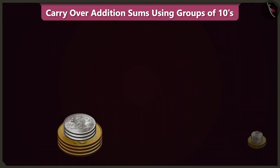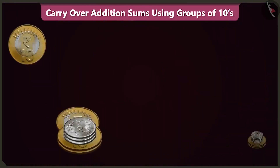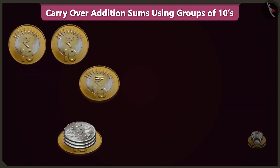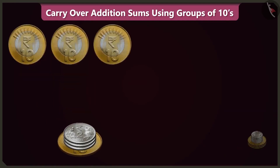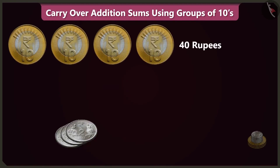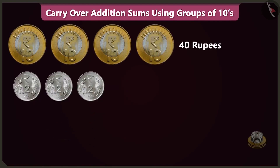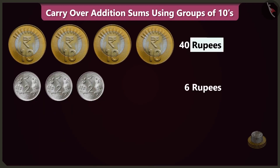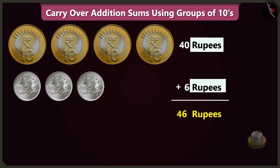In this pile of coins, there are 4 coins of 10 rupees — which is 40 rupees. And 3 coins of 2 rupees — that is 6 rupees. So 40 and 6, there are 46 rupees.